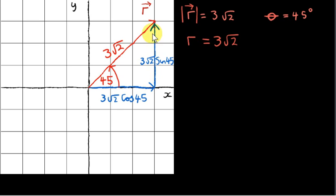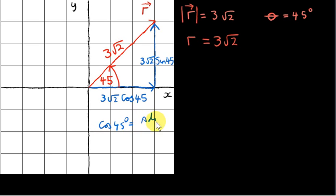From basic trigonometry we can work out the two short sides of this right-angled triangle. This side here is adjacent to 45 degrees in this right-angled triangle. So to find this adjacent side we multiply the hypotenuse by the cos of 45 degrees. That comes from the fact that cos of 45 degrees is the adjacent side, which is x — the x value of this point — divided by the hypotenuse, which is 3 root 2. And then we just cross-multiply.